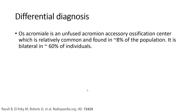Differentiation: Os acromiale is an unfused acromial accessory ossification centre which is relatively common and found in 8% of the population. It is bilateral in 60% of individuals.